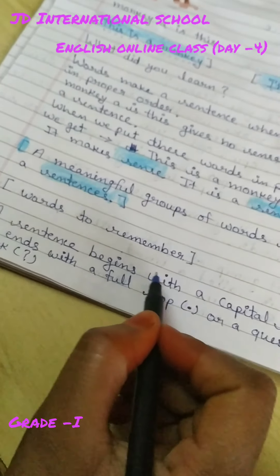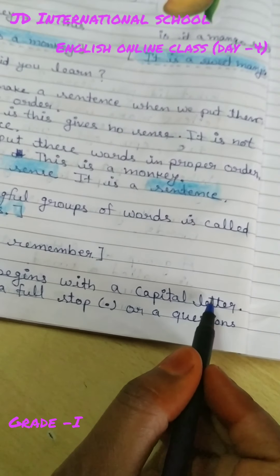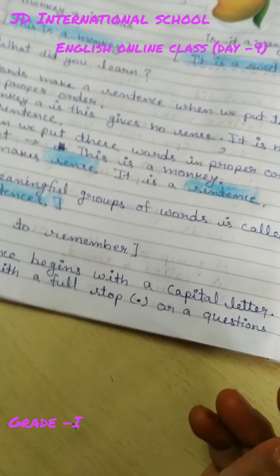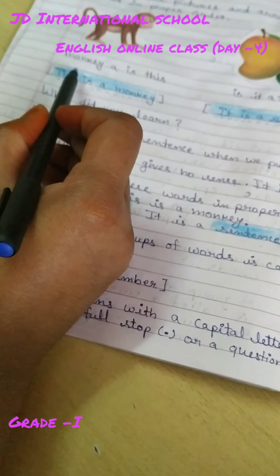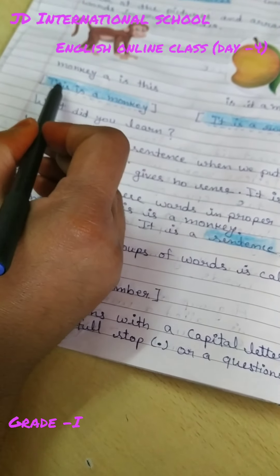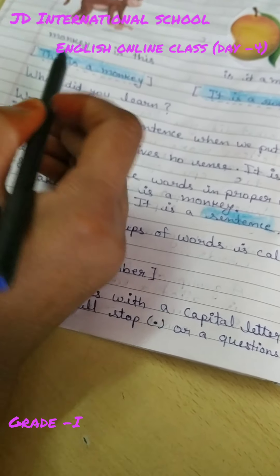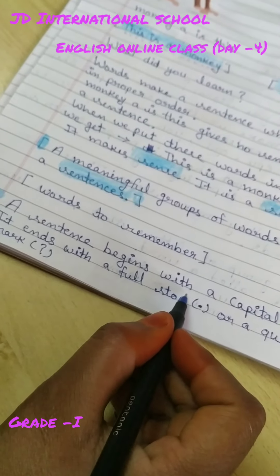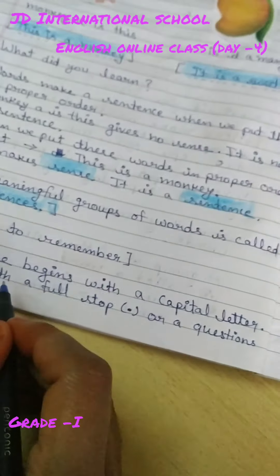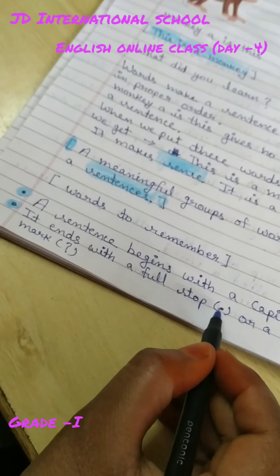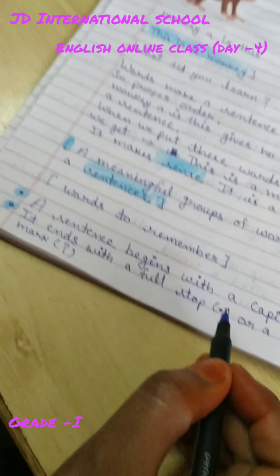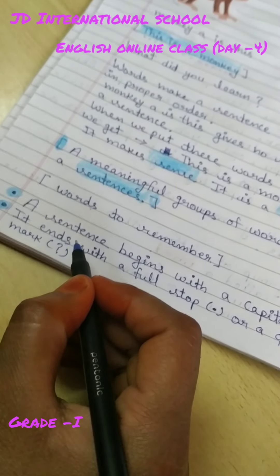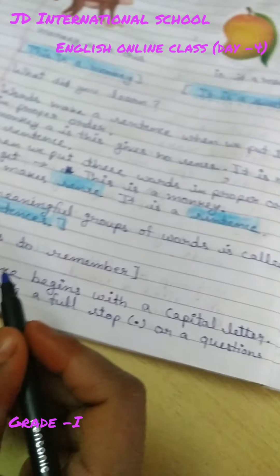A sentence begins with a capital letter. एक sentence हमेशा capital letter से start होता है — जैसे 'This is a monkey' में 'T' capital है। And it ends with a full stop, a question mark, or an exclamation mark, depending on the type of sentence.